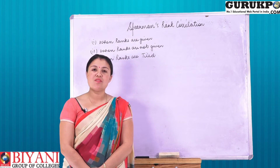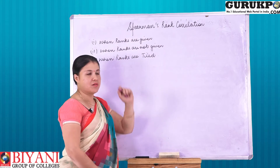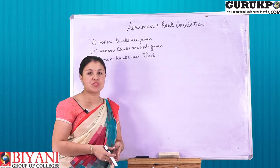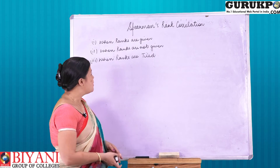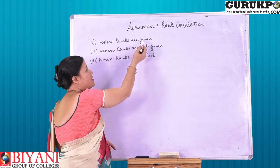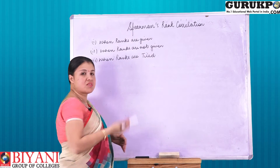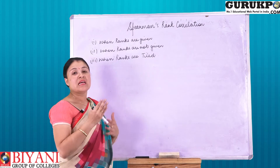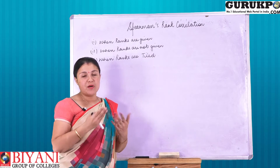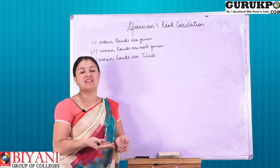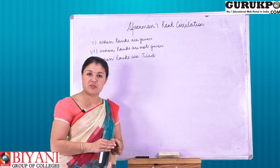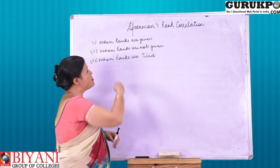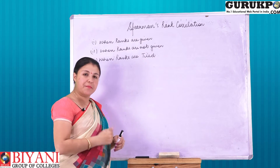The topic which I am going to discuss today is Spearman's Rank Correlation. In Spearman's Rank Correlation, there are three types of questions which have generally been asked in the exam. First, when ranks are given to us. Second, when ranks are not given to us — in this we have to find out the ranks. And third, when ranks are tied, meaning a particular person gets first position and another person equally holds the first position. So here in Spearman's Rank Correlation, we have to find out the answers of these three methods.